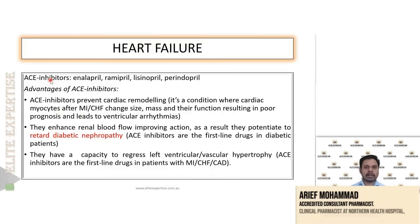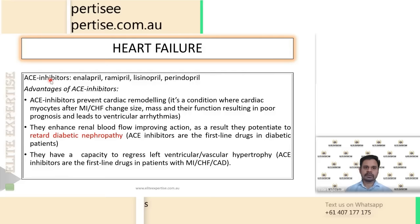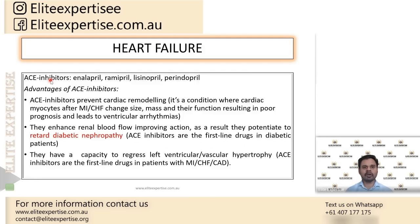ACE inhibitors — captopril, enalapril, ramipril, lisinopril, perindopril — all are examples of ACE inhibitors. The mechanism of action involves mainly blocking the angiotensin-converting enzyme. By blocking this enzyme, they prevent the formation of angiotensin 2.